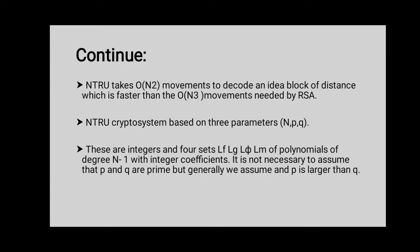It is observed that the security depends on the fact that it is very difficult to find extremely short vectors. NTRU takes order of N² operations to decode a message block of size N, whereas for RSA it takes order of N³ operations to decode a message block of size N. So we can see that NTRU is way more faster than RSA.